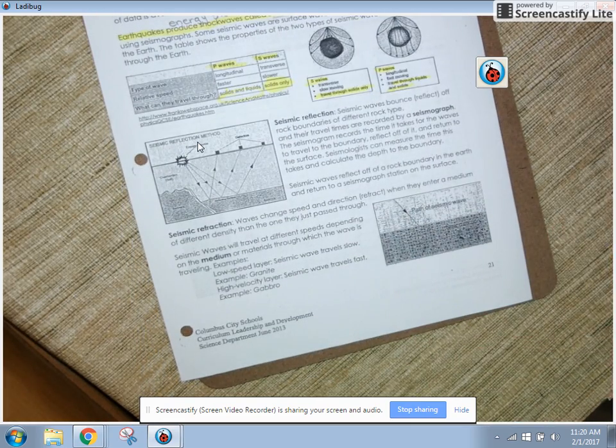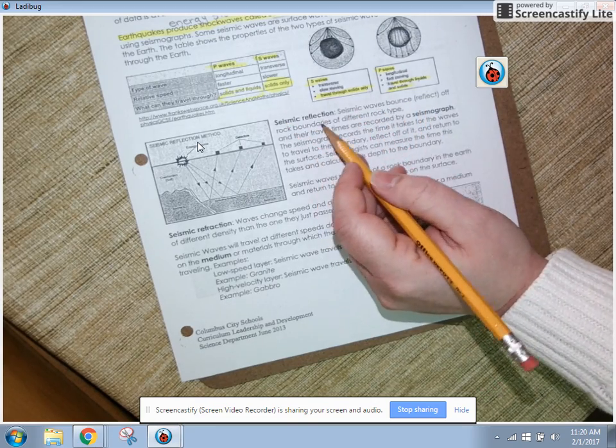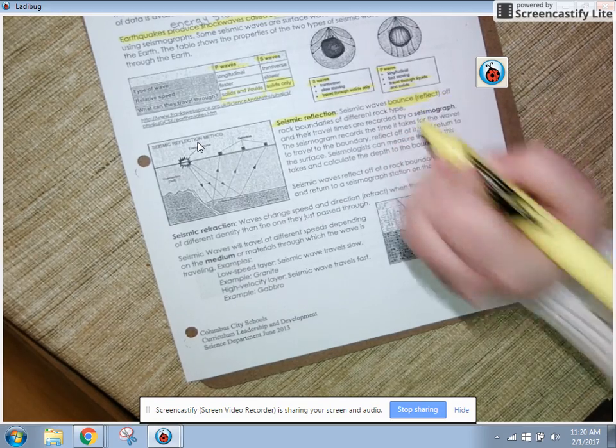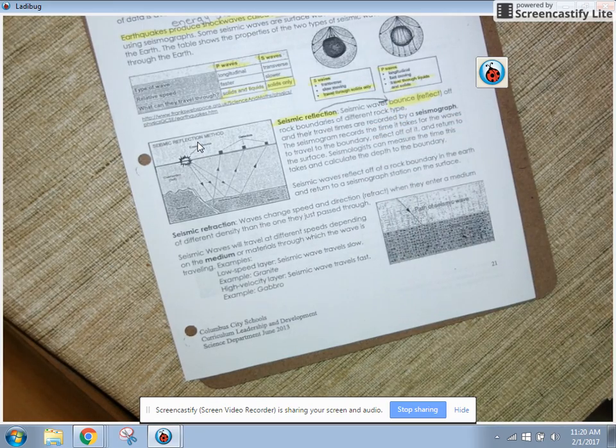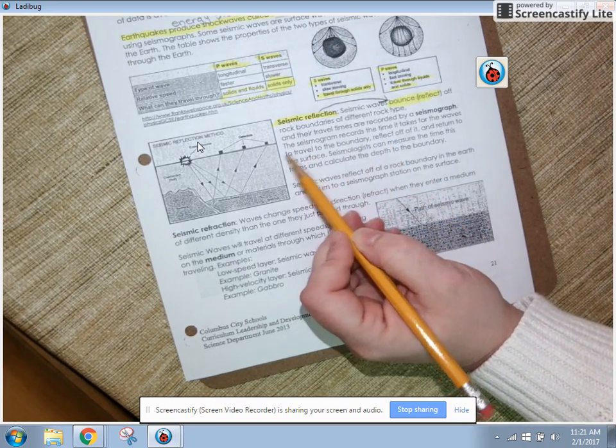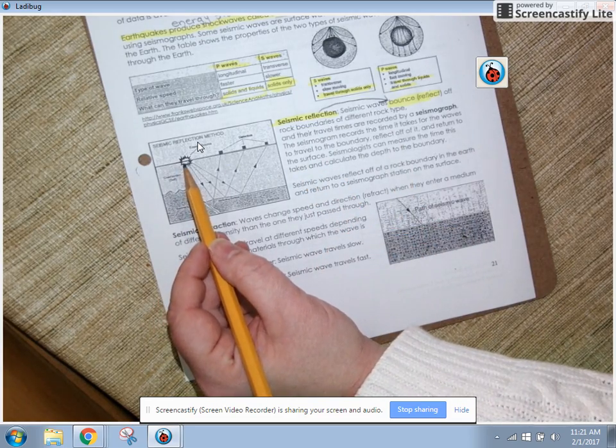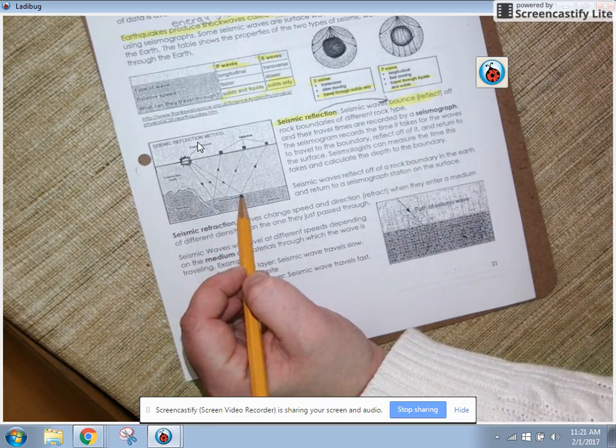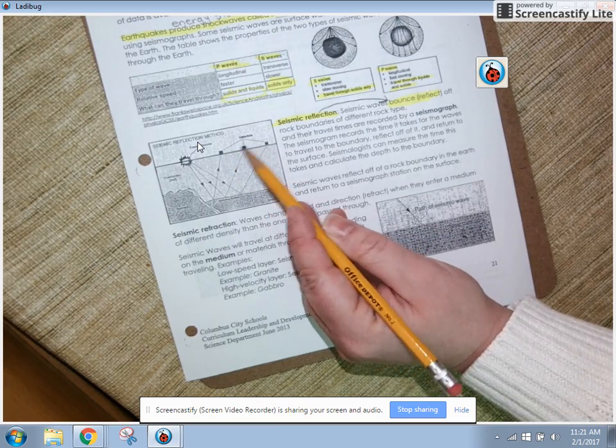So we're going to keep reading. Seismic reflection. Seismic waves bounce or reflect off of rock boundaries of different rock type. I'm going to highlight seismic reflection. And then I'm going to point out that really, when you're talking about reflection, you're talking about those waves bouncing, in other words, reflecting off. It says the seismograph records the time it takes for the waves to travel to the boundary, reflect off of it and return to the surface. That's what this is over here. So here, the energy source, earthquake wave, seismic waves are released. You can see that they hit a different layer, and then they bounce off of it. They reflect back.